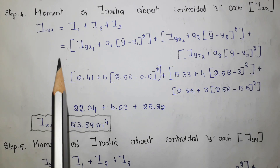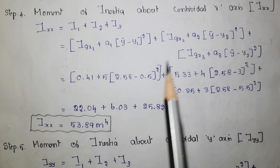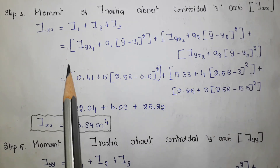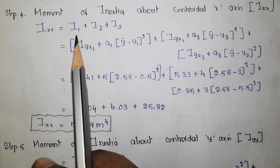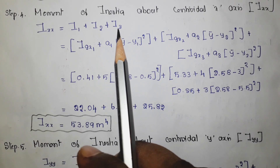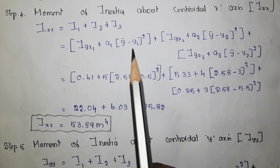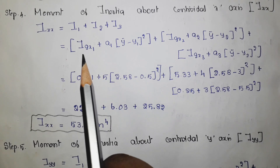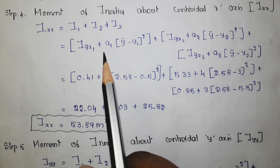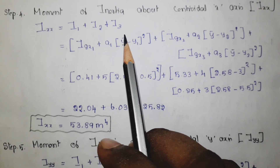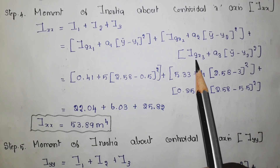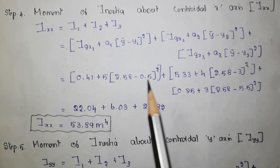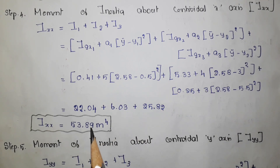Step 4 is finding the moment of inertia about the centroidal x-axis, Ixx. There are three rectangles, so I1, I2, and I3 represent the moment of inertia for each rectangle. Using the parallel axis theorem, the formula is Igx1 plus a1 into (y-bar minus y1) squared, which gives the perpendicular distance. The same parallel axis theorem is applied for the second and third rectangles. Substituting all values, the answer is 53.8489 meter to the power 4.